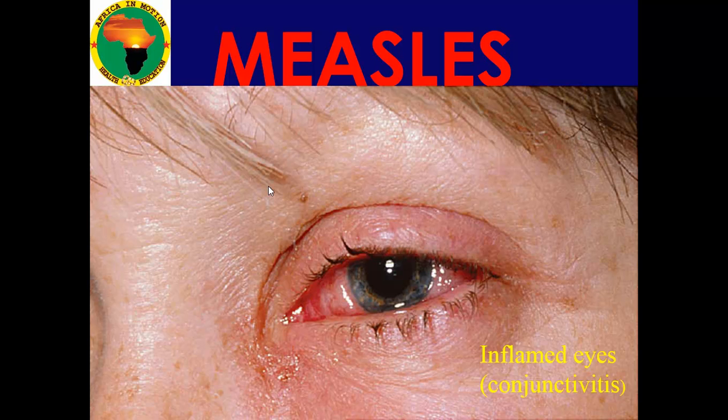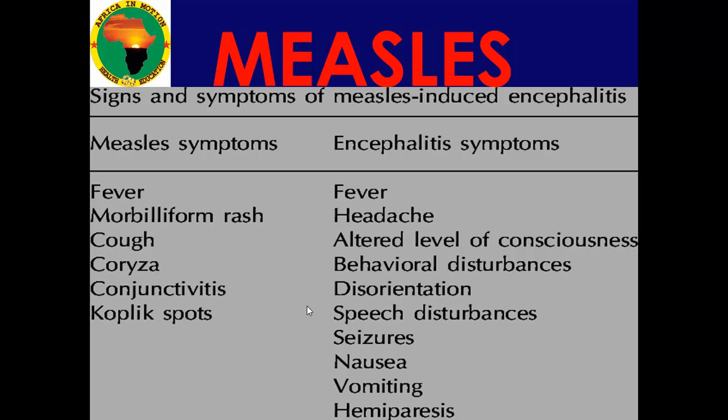You can see the conjunctivitis — inflammation of the conjunctiva — which is very red and can soon get secondarily infected by other bacteria. Measles can also complicate into encephalitis, meaning inflammation of the brain tissue, presenting with fever, headache, altered consciousness, behavioral disturbance, disorientation, speech disturbances, seizures, nausea, and vomiting.